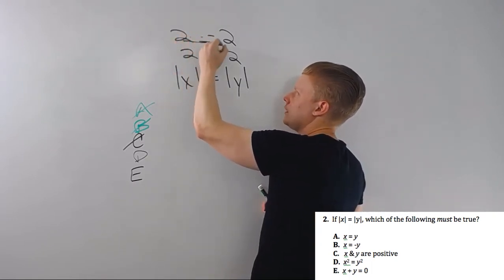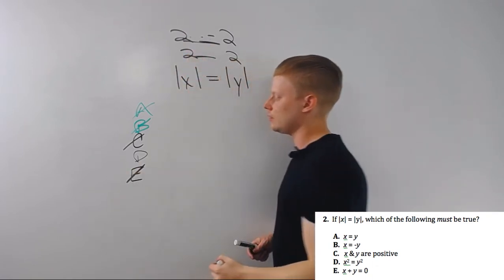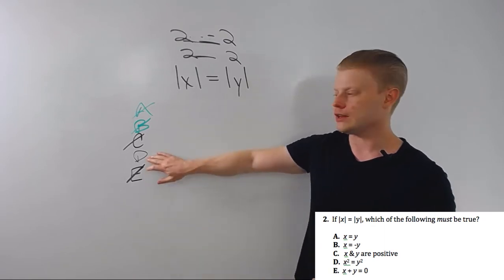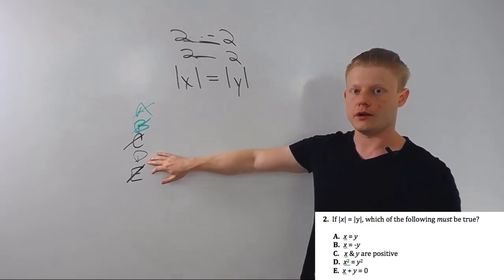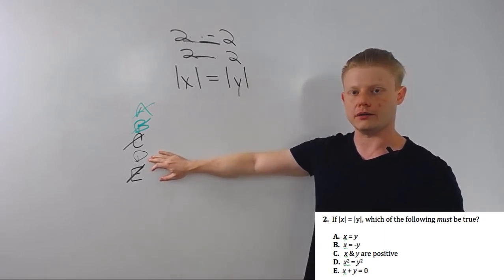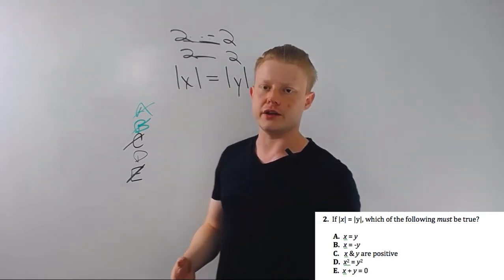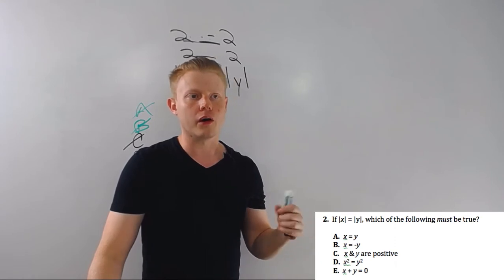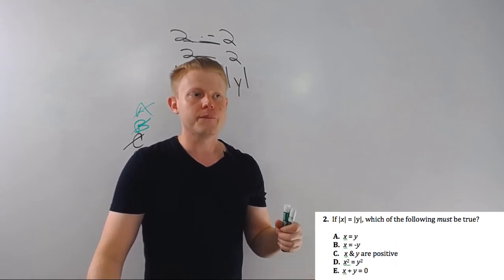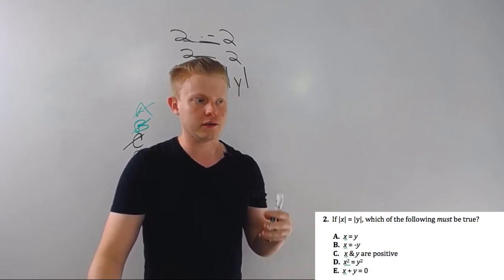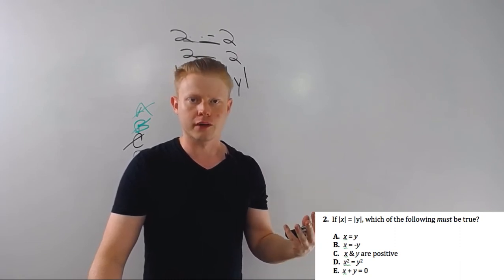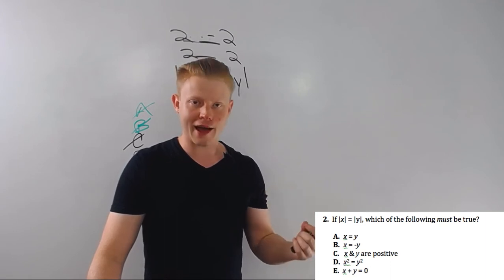So I'm going to kind of want to make sure on this by looking at E and making sure that there's a case where it doesn't have to be true. X plus y equals zero. Well that works here but it doesn't work here. So you see how much easier it is just to try to prove things false. And when you think you've got a right one, don't get hung up on it. Don't spend a minute trying to figure out if there's a way you can make it wrong.